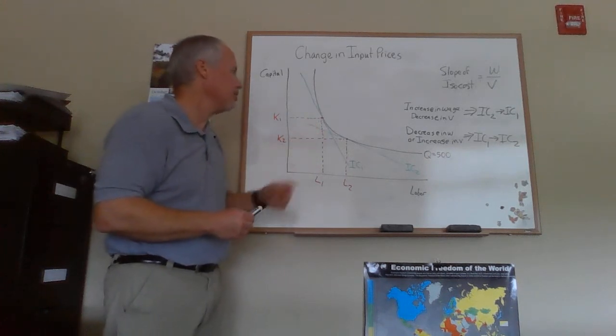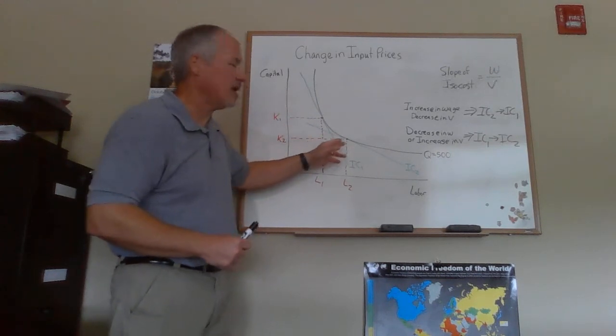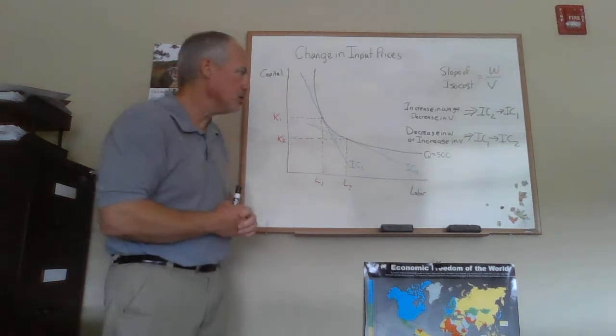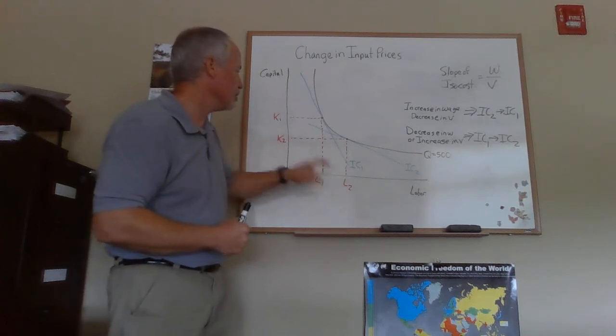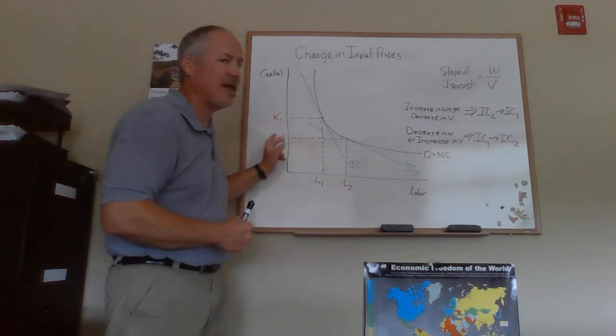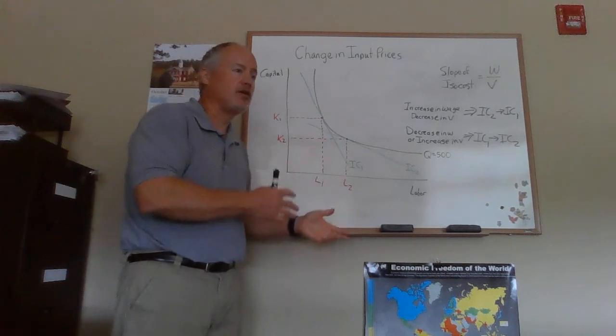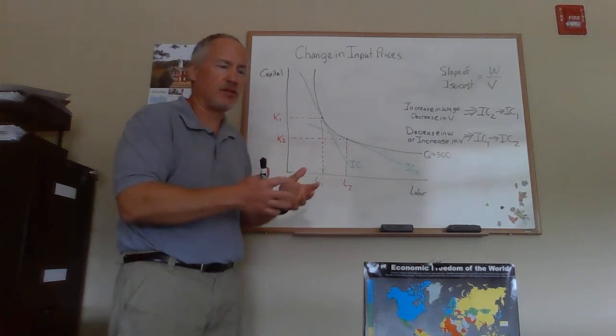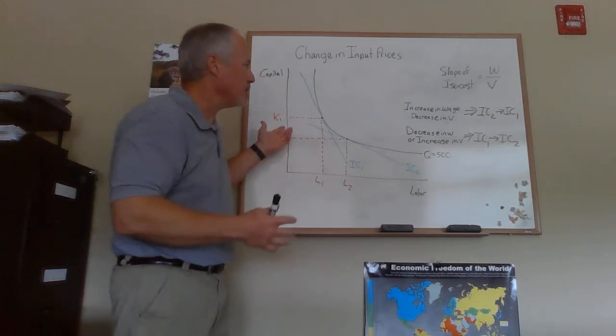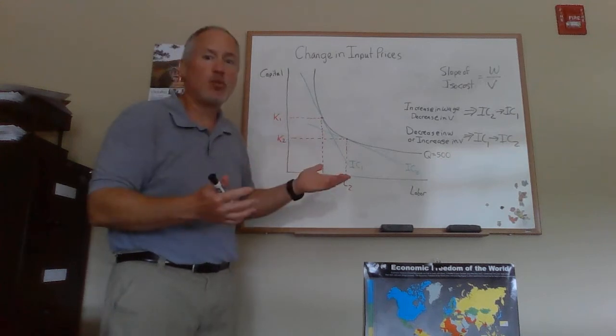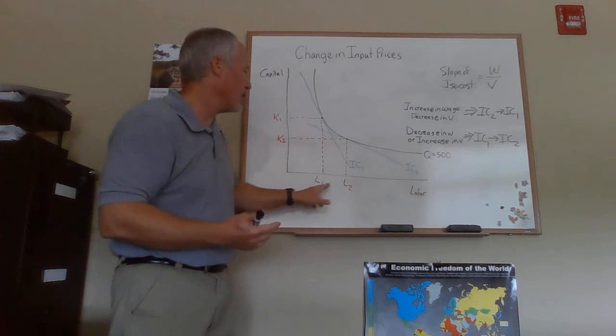If the wage of labor goes down, if the shift is from IC1 to IC2, then you can see now we're shifting from K1 and L1 to K2 and L2. We're going to use less capital and more labor. And if the wage of labor goes down, labor is now relatively cheaper. Labor is cheaper, so you'd want to use more labor. Or if the price of capital goes up and then that's more expensive, you want to conserve on using capital, so you'd use less capital and more labor.